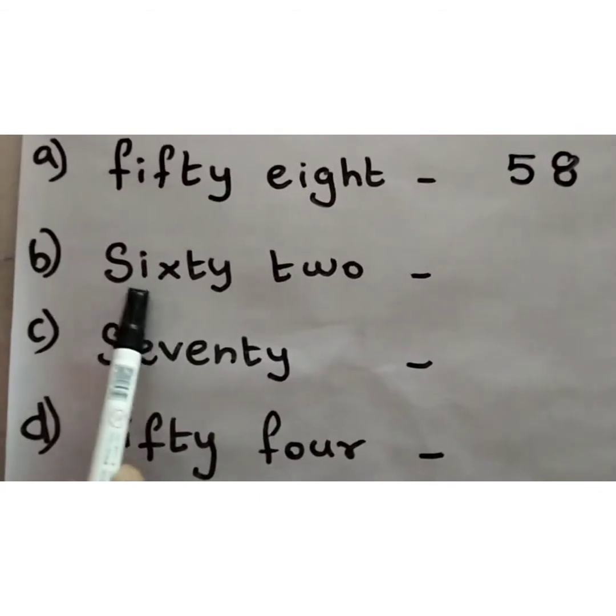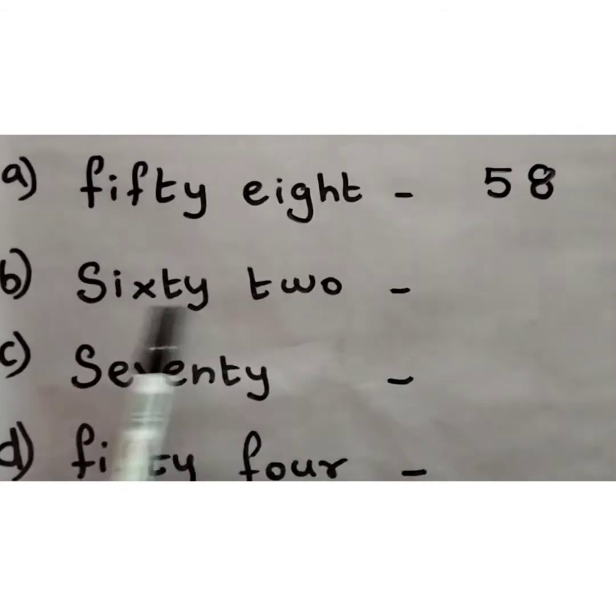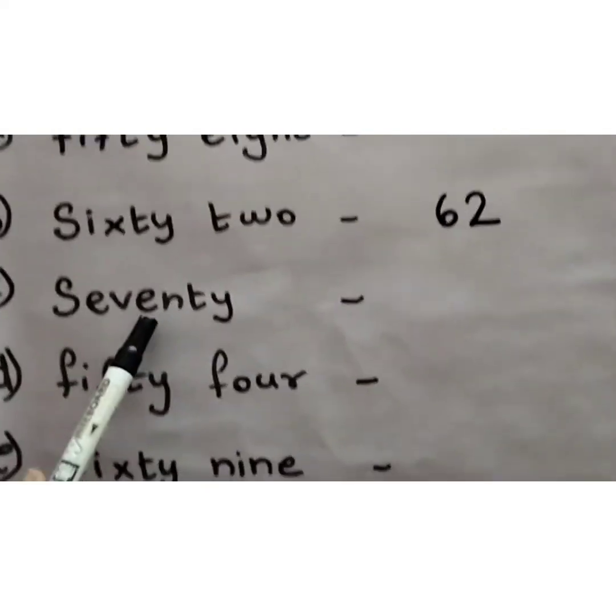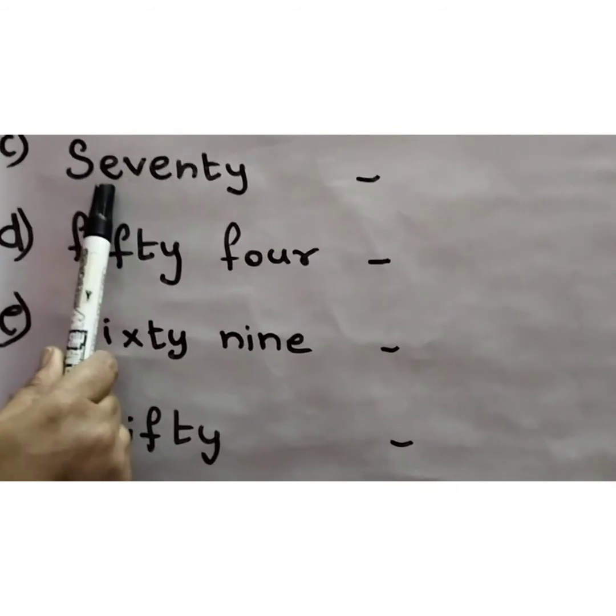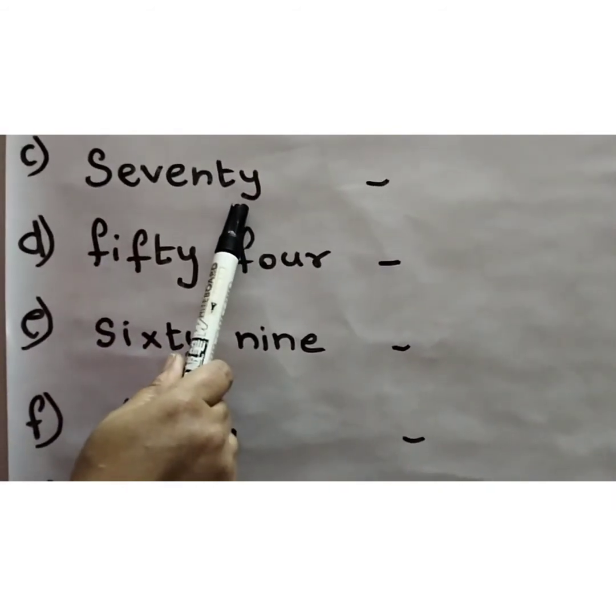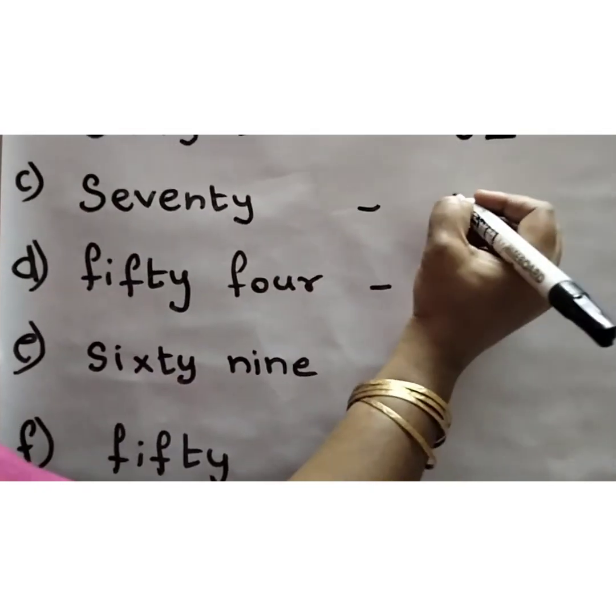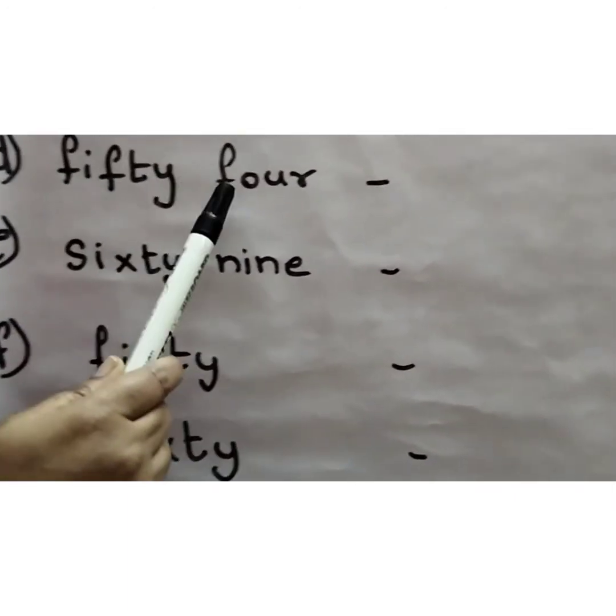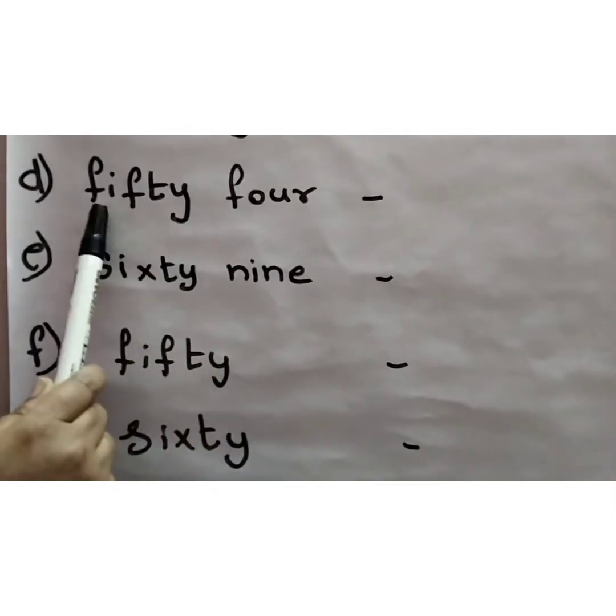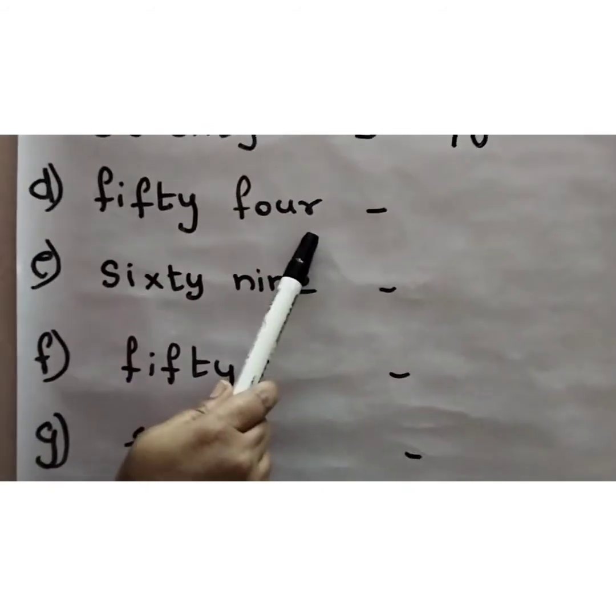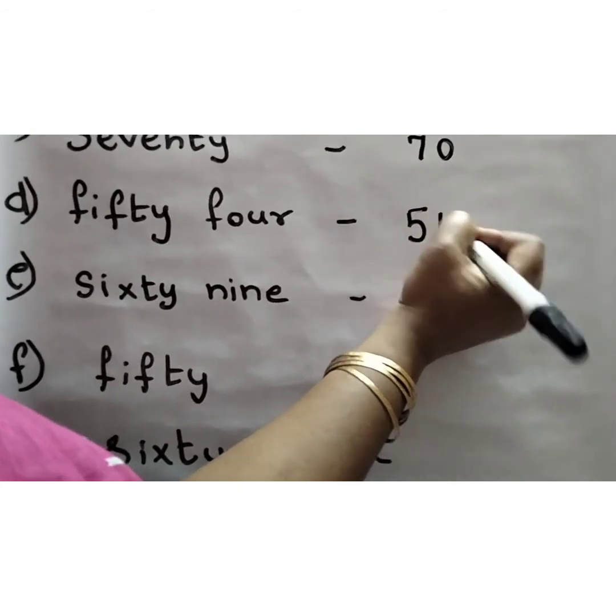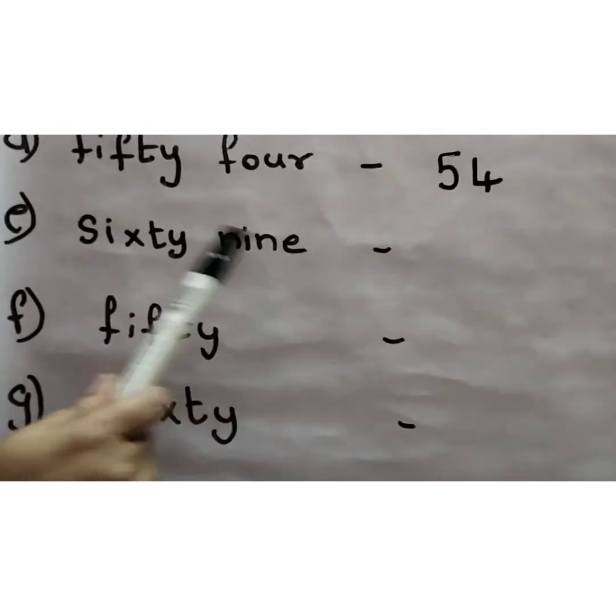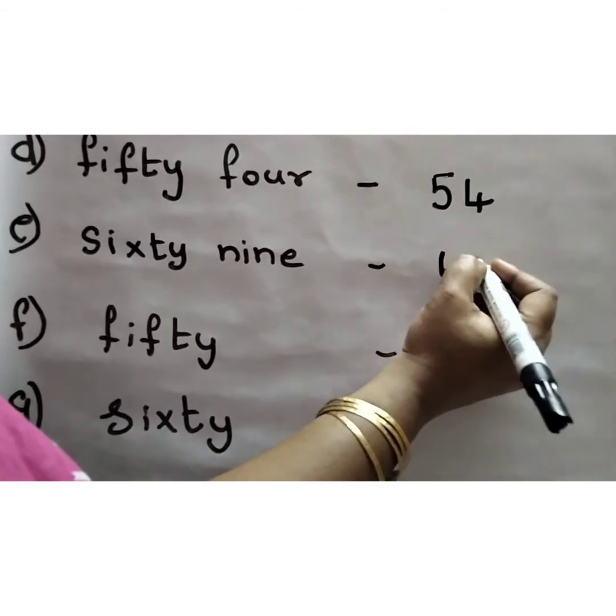S-I-X-T-Y T-W-O, 62. So 62. Okay. S-E-V-E-N-T-Y, 70. It ends with T-Y. Isn't it? Fifty-four. F-I-F-T-Y F-O-U-R, 54. You can also read with me children. Read with me and you can say the answer. S-I-X-T-Y N-I-N-E, 69.